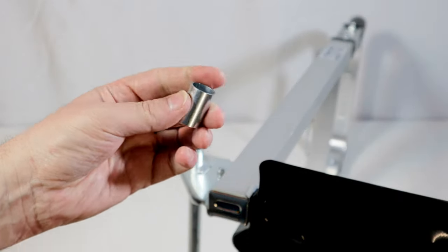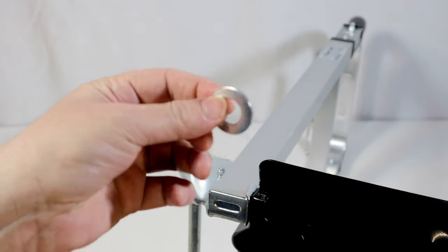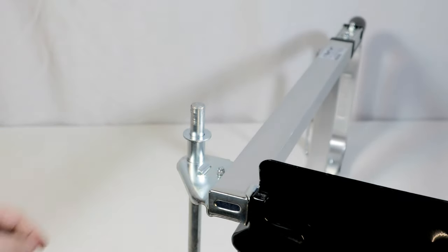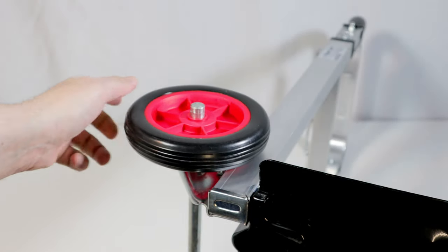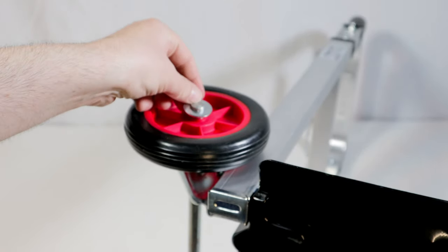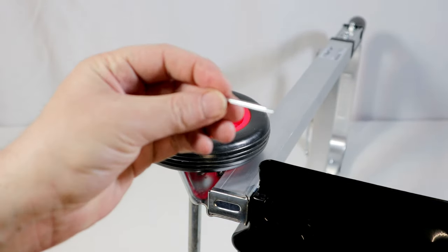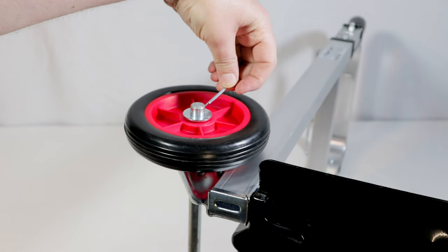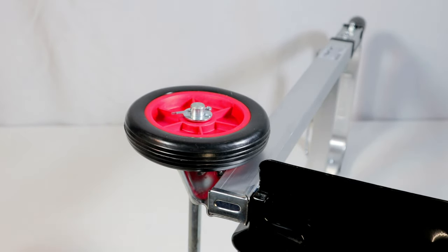I insert the spacers on the axis. I insert the washer on the axis. I put the wheel on the axle. I put another washer on the axle. I insert the stop on the axle. I insert the stop on the axis that will block everything simply by bending the ends.